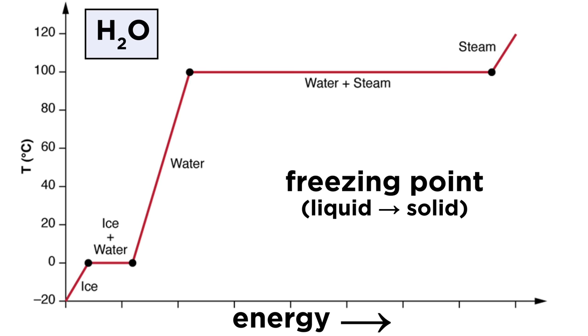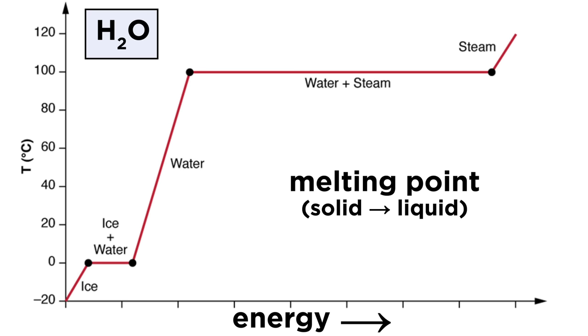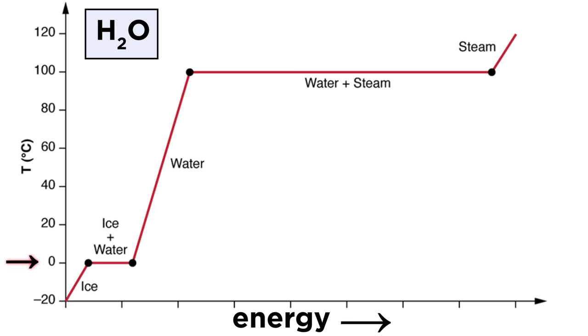The freezing point of a substance is the temperature at which a liquid turns to crystalline solid. The melting point is the temperature at which a crystalline solid melts. These are the same temperature.